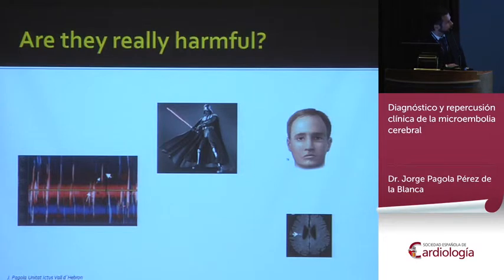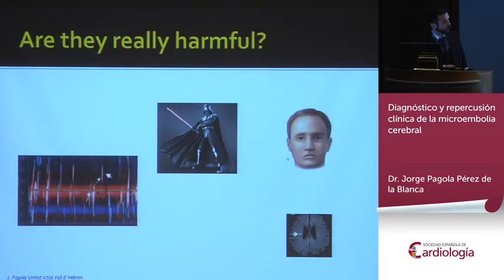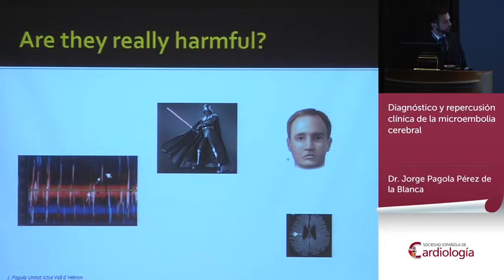But if we have a solid microembolism and the neurological examination is normal after the procedure, we can perform an acute MRI. This is a DWI MRI — another way to check if we have a stroke or a hyperintensity that represents a microinfarct. FLAIR imaging is another modality we can use to be even more accurate.